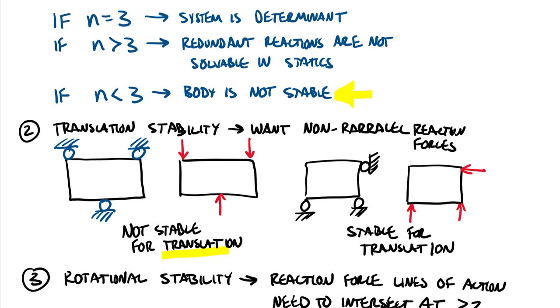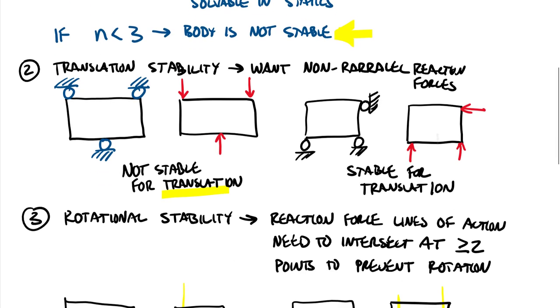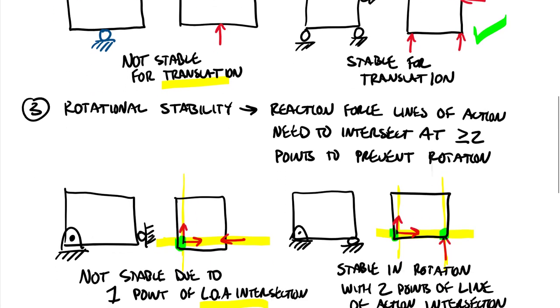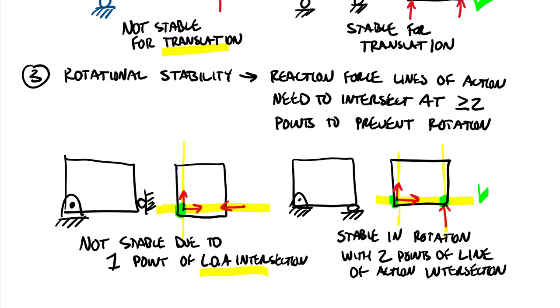So again, n equals 3. So if we're looking at what are the good things. Just to highlight those. n equals 3 is a good thing. Right. We want three unknowns, a determinant system, no redundancy. We want non parallel reaction forces stable for translation. And we want two points of intersection. Those three things give us a system that is solvable in statics.